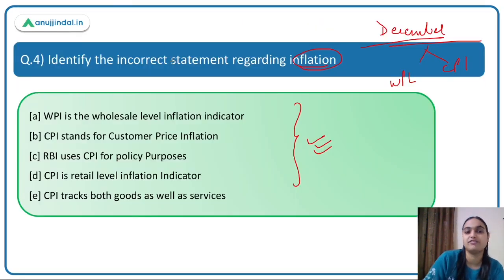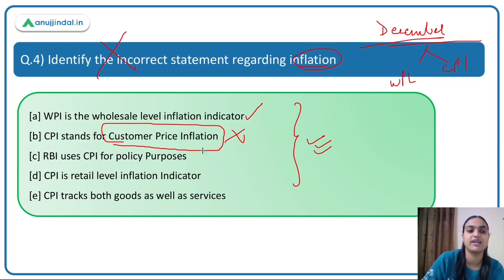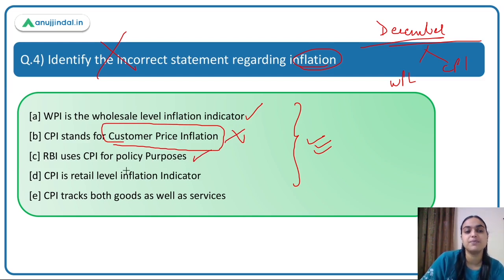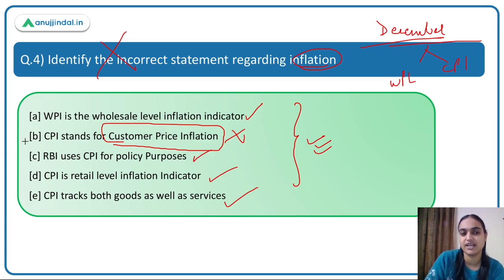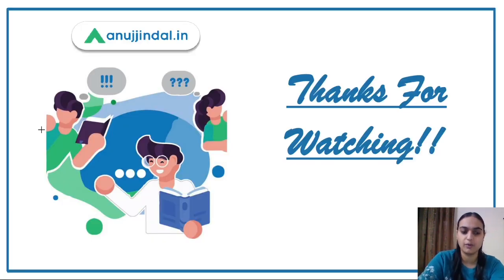Coming back to the question identifying the incorrect statement: WPI as wholesale level inflation indicator is correct. 'CPI stands for Customer Price Inflation' is incorrect — it stands for Consumer Price Index. RBI using CPI for policy purposes is correct, and CPI tracking both goods and services is correct. Only statement B is incorrect, so the answer is Option B. That concludes today's session — thank you.